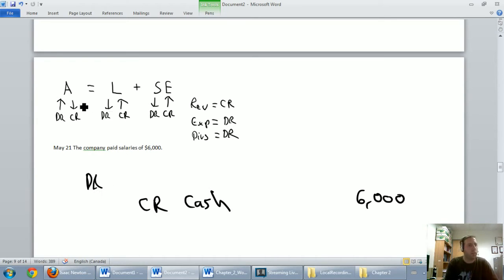Are they an asset? No way. A liability? Well, we can owe salaries, but that's not what this is. Shareholders' equity? Nope. Revenue, expense, or dividend? Salaries are an expense of a company. They're a cost of doing business. If you want to have a company that has employees, you've got to pay their wages. Wages and salaries are expenses. So we're going to debit salaries expense for $6,000. Our date is May the 21st.